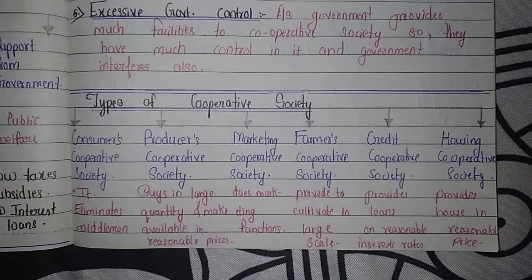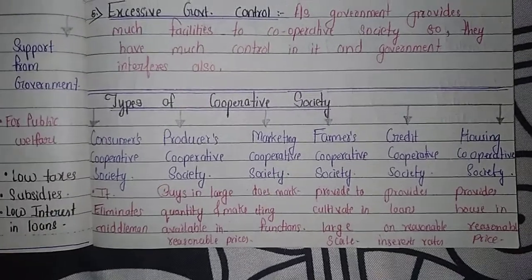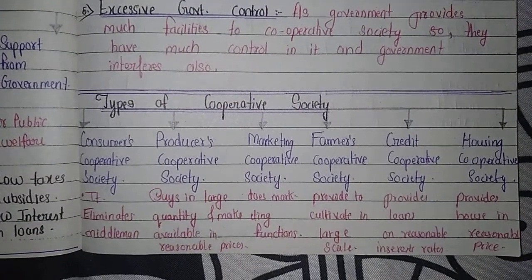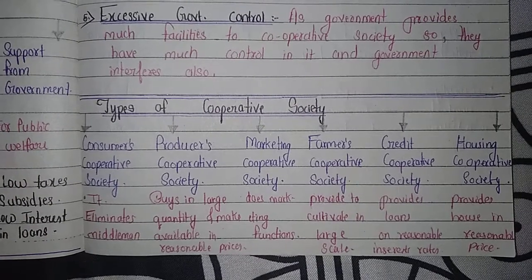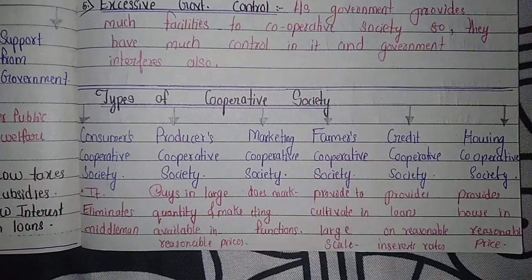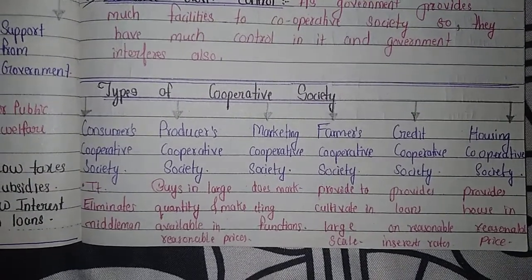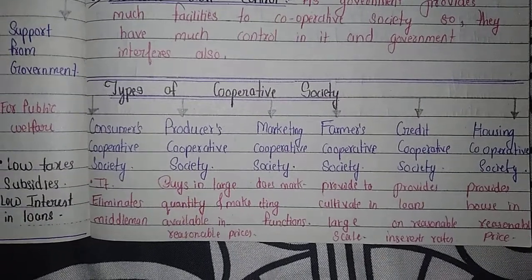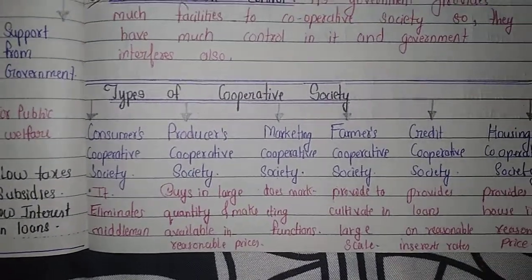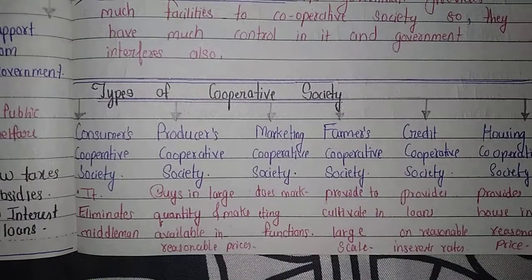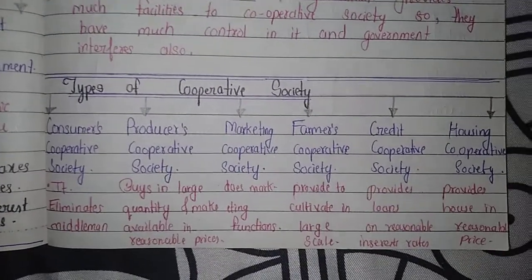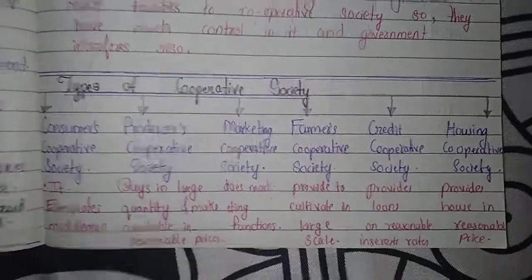The last type is housing cooperative society. People who do not have a home form a society together. The society constructs houses in a systematic way and provides them to members at reasonable prices.